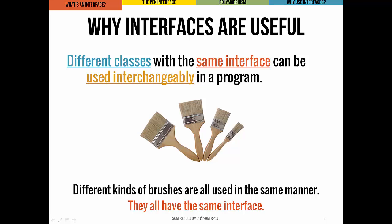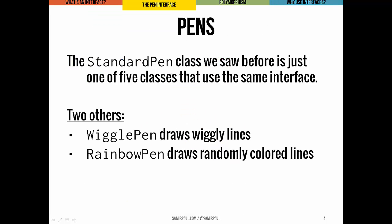If you have code for using a class, it applies just the same to all other classes that share the same interface. We're going to use this idea with turtle graphics. The standard pen class from the last lecture is one of five classes that all share the same interface — the same set of public methods used in the same way. Examples of two others are wiggle pen, which draws wiggly lines, and rainbow pen, which randomly changes the color as you draw. Even though these pens do something slightly different, they all share the same general interface.